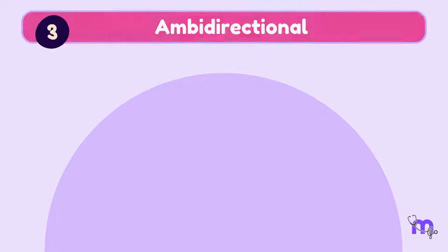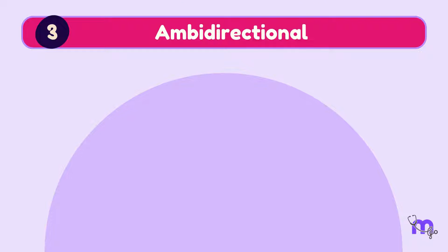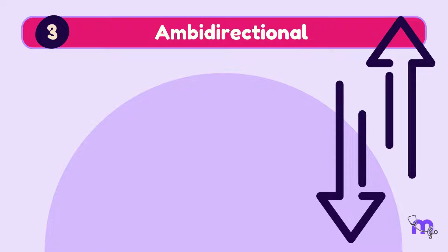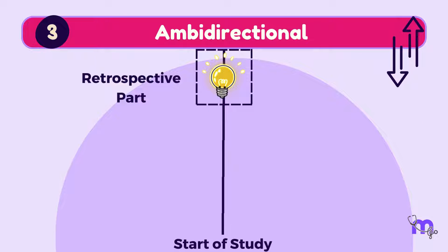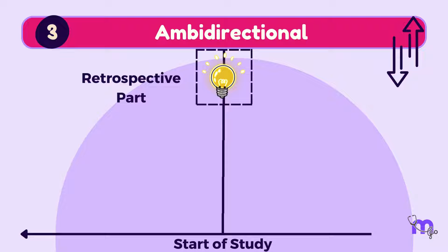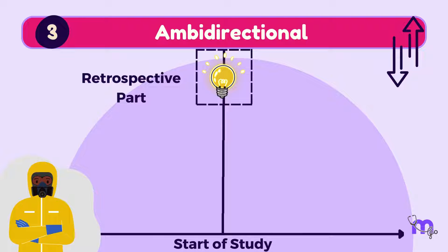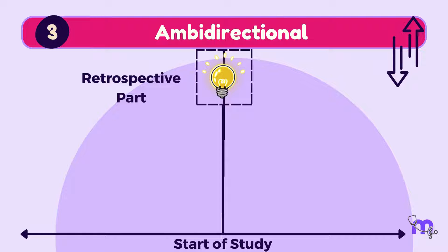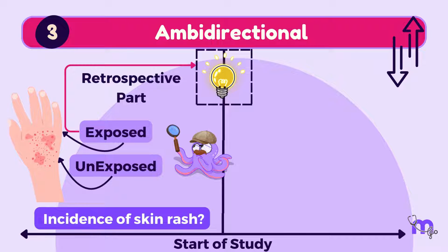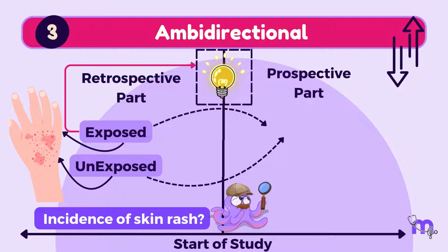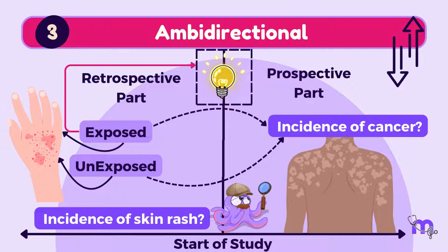The word ambidirectional means to be in both directions. In this study, the direction may not be as well defined as the prospective or retrospective one. For example, if I want to assess the incidence of lung cancer among radiation workers in a hospital, I select a cohort of people and look back in time to see whether they have been exposed to radiation or not, and then follow them up to check whether they develop skin cancer.